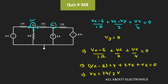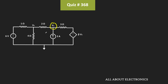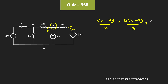Now let us apply the KCL at the second node. At this node, there are three incoming currents — these two currents and this 2A. If we apply the KCL at this node, then we can write: (Vx − Vy) divided by 2 Ohms, plus β times (Vx − Vy) divided by 3 Ohms, plus 2A, is equal to zero.